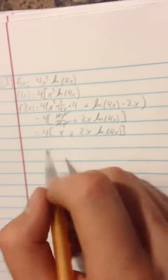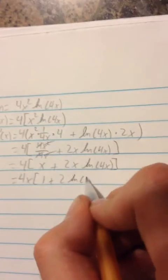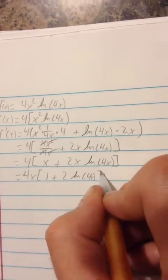Then you're going to factor out an x. So you get 4x times 1 plus 2 times the natural log of 4x. And that there is your answer. Finally.